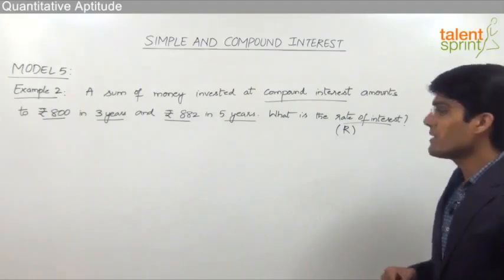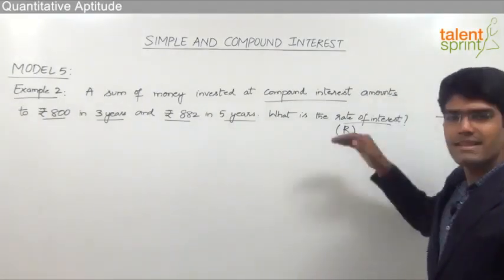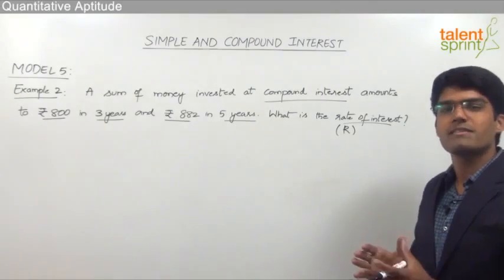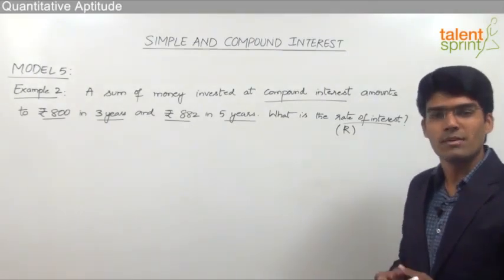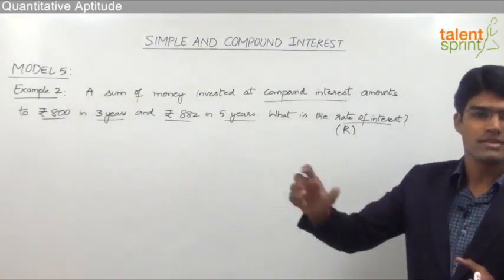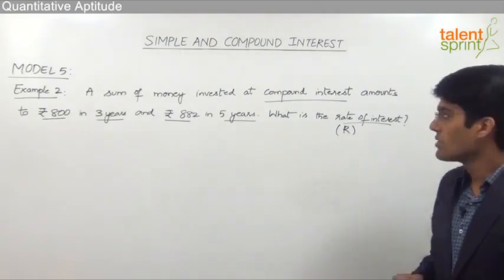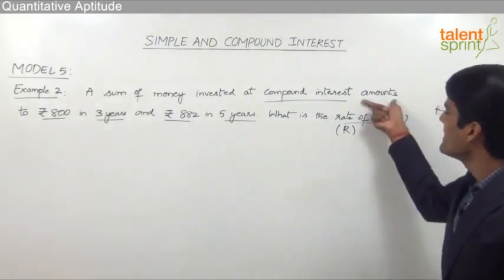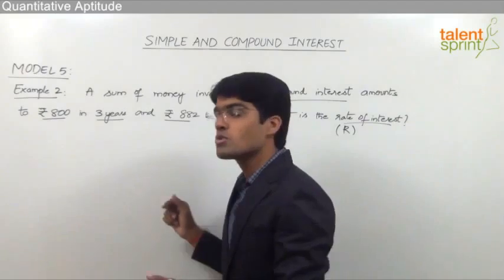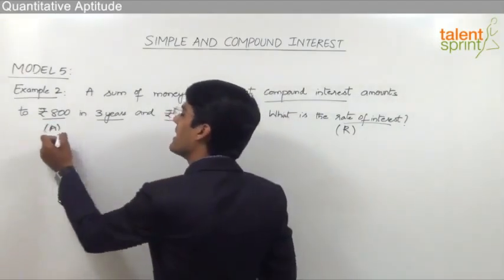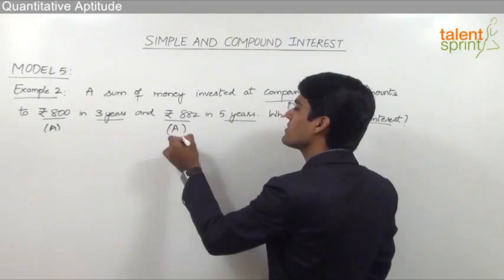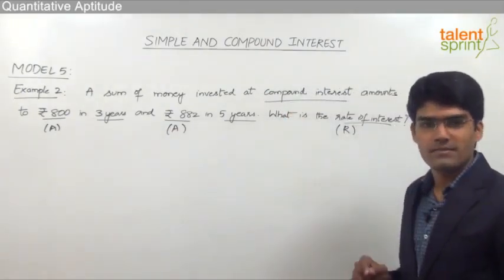The important point to be understood here is whenever the question says 'a sum of money amounts to', we always refer it to the total amount, because a principal always amounts to some total amount after some time. So when it says amounts to 800, this 800 is the total amount in 3 years, and 882 is also the total amount for 5 years.